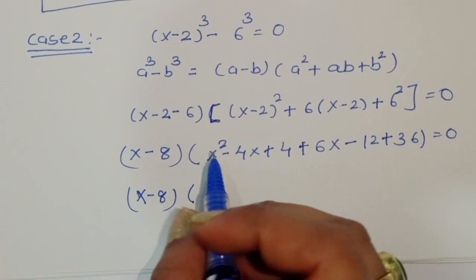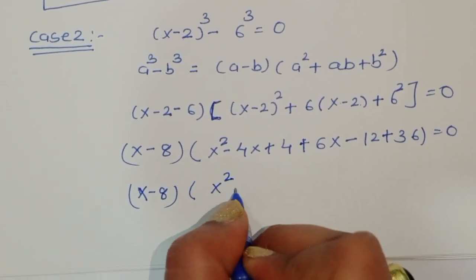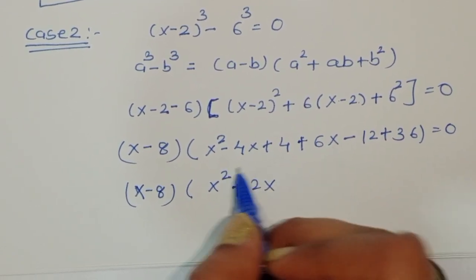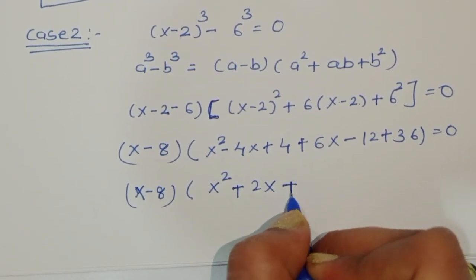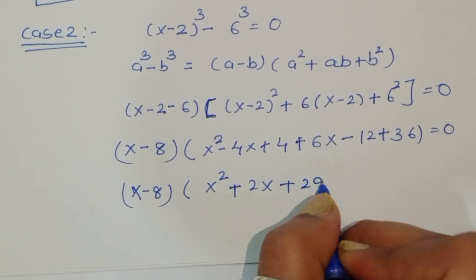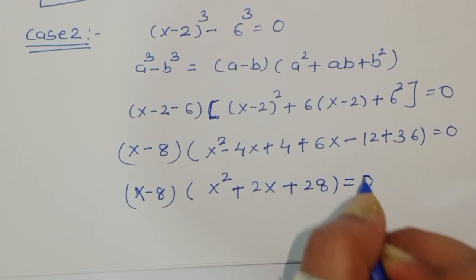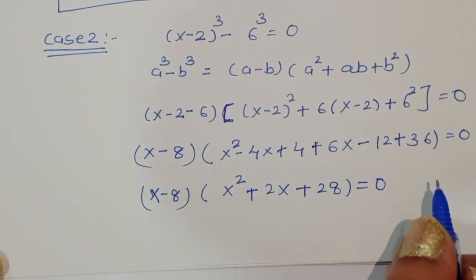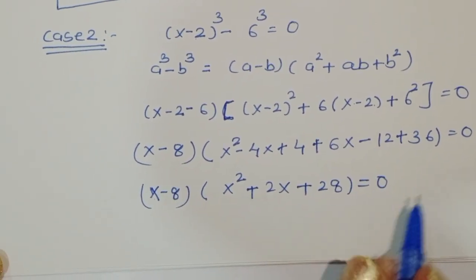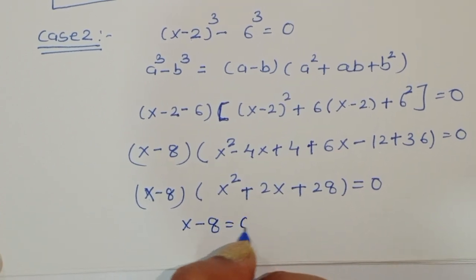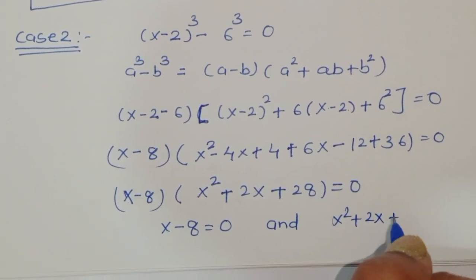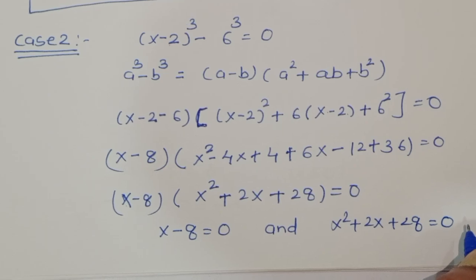Simplifying the bracket: x² minus 4x plus 4 plus 6x minus 12 plus 36 gives x² plus 2x plus 28. So we have (x minus 8)(x² plus 2x plus 28) equals 0. Two equations: x minus 8 equals 0, and x² plus 2x plus 28 equals 0.